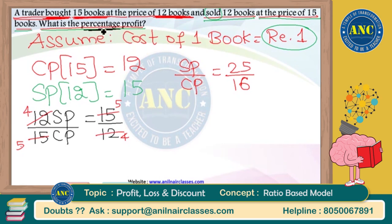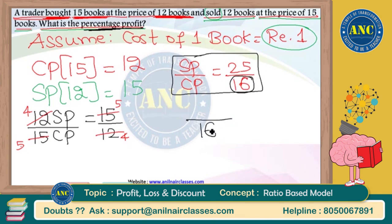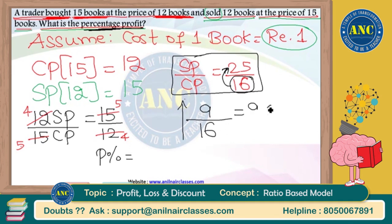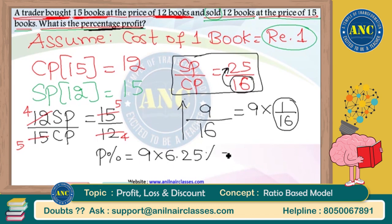The question asks for profit percentage. After getting SP by CP, the denominator is 16 — keep the same 16 in the denominator. Now 16 is becoming 25, so there is an increase of 9. That increase is the profit. Profit percentage = 9/16 = 9 × 6.25 = 56.25 percentage.